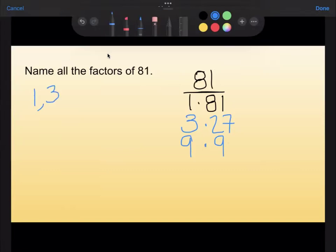1, 3, 9, 27, and 81. So I don't have to repeat the 9, even though it's there twice. I don't have to repeat it in my list.